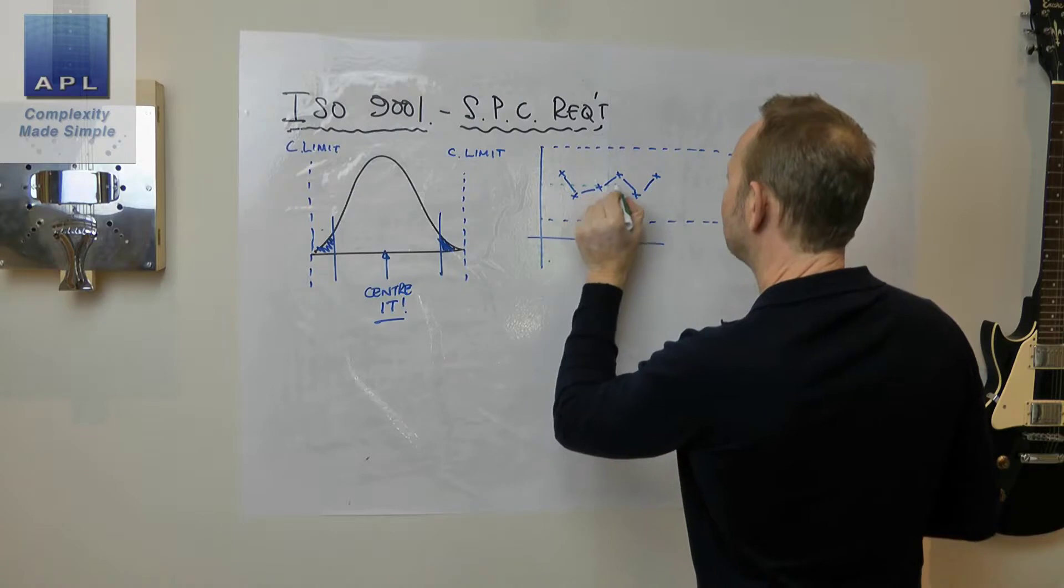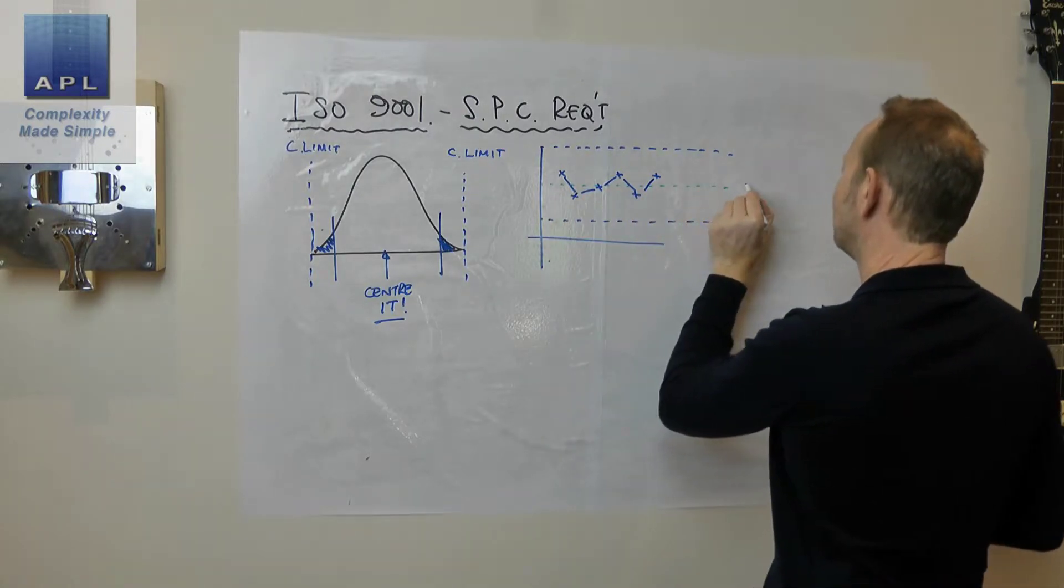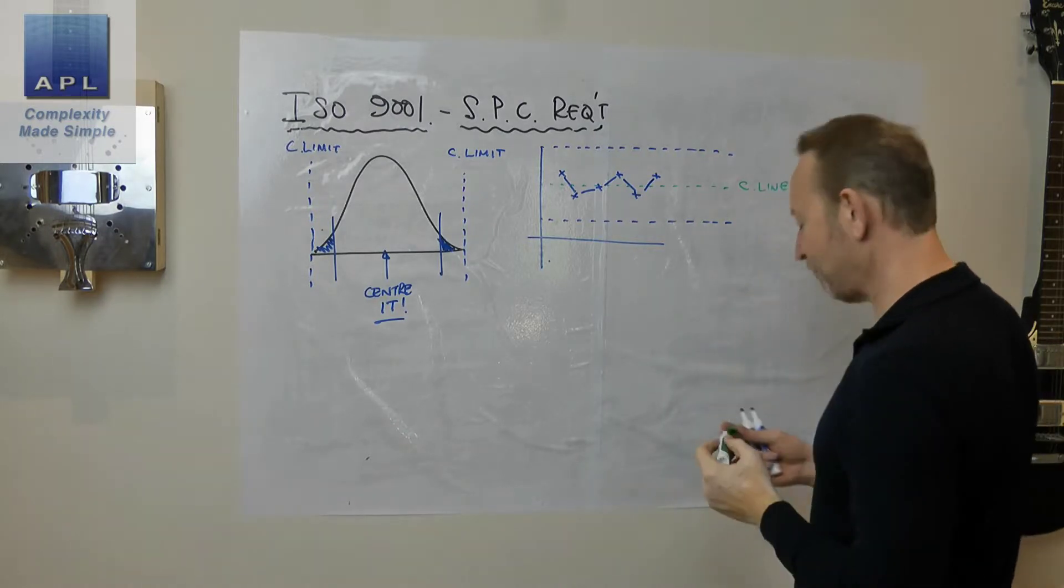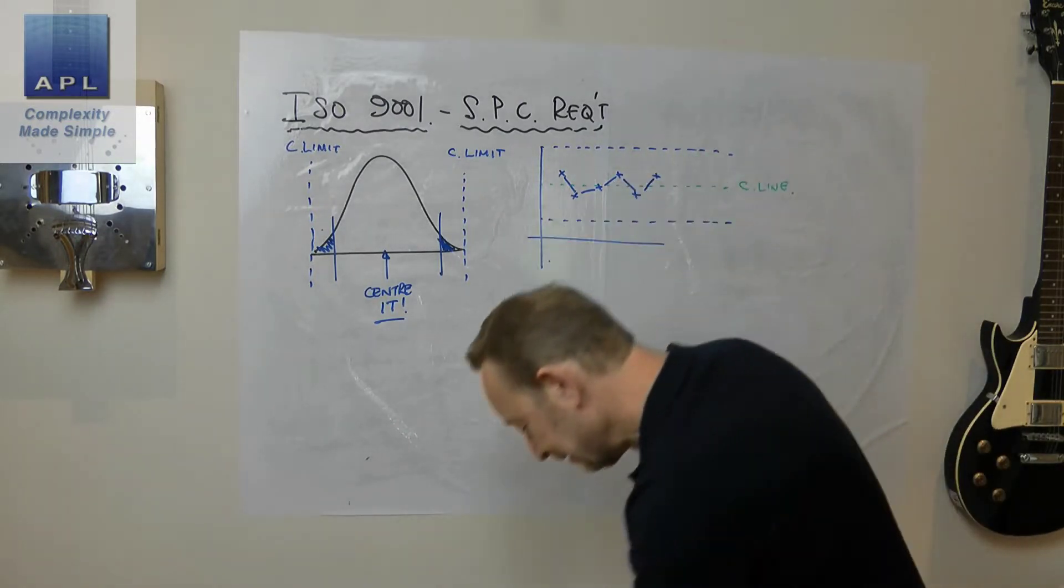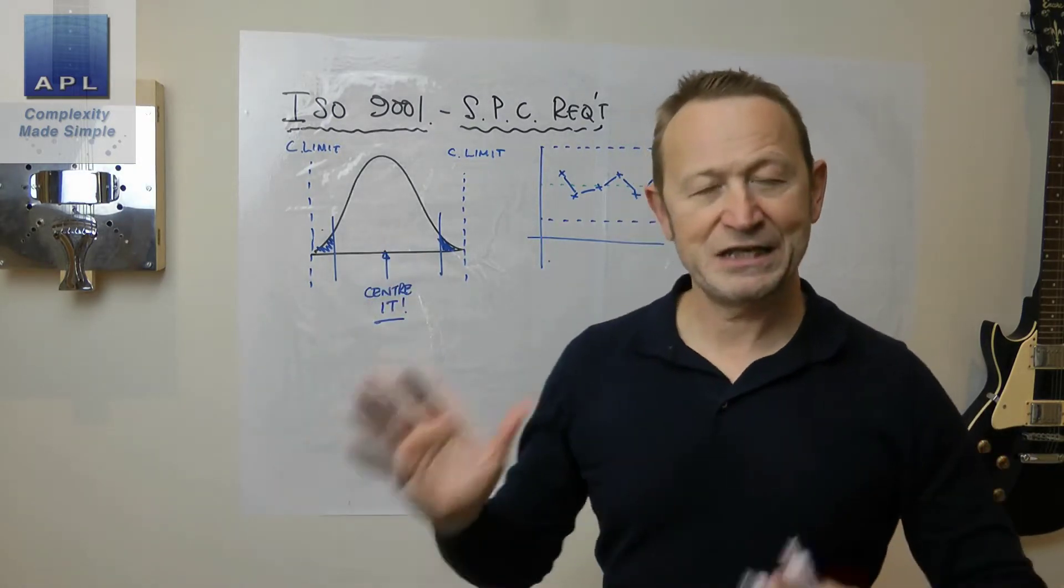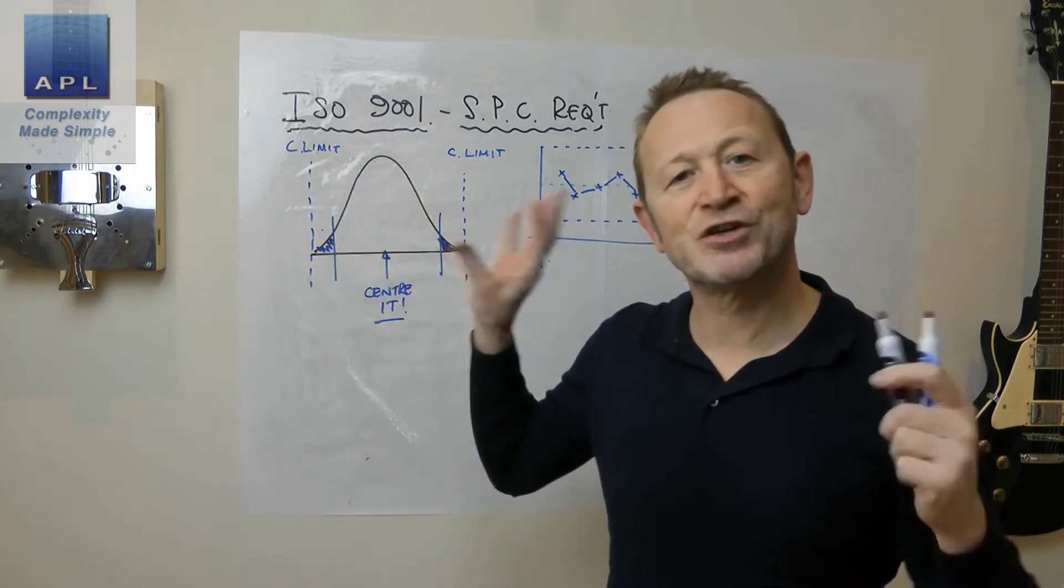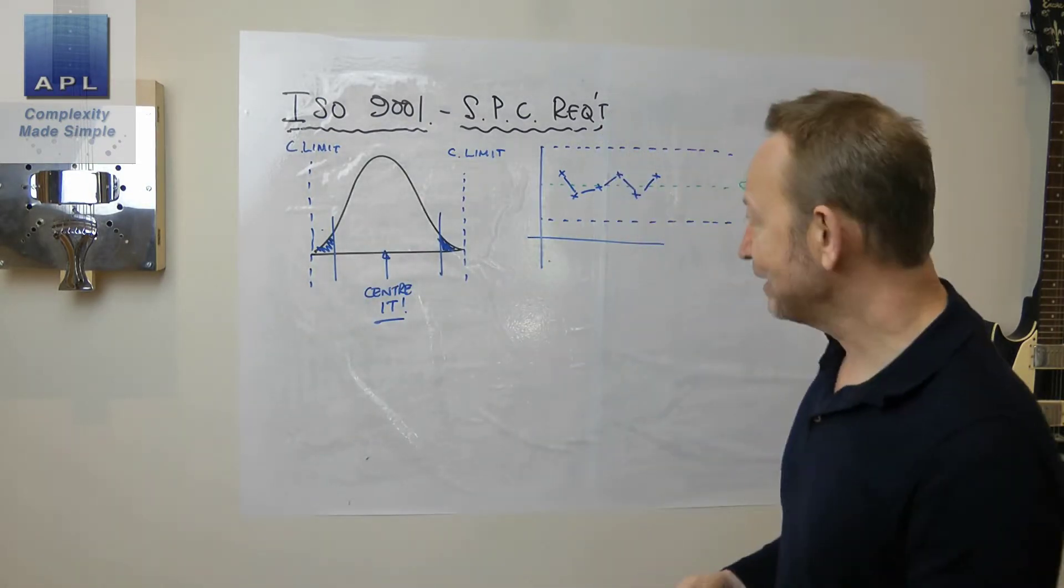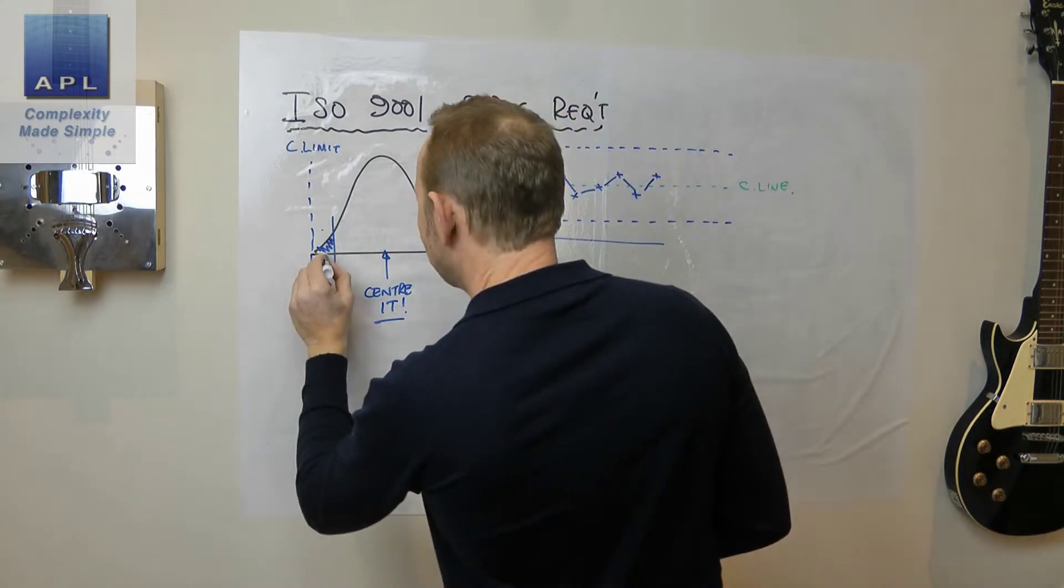And of course the other line that you put on the run chart - you also put the center line, the average on there. And then he knows what he's doing. He knows what this picture looks like. It's communicating this picture to him because at some point he's going to get a data point which lands there.